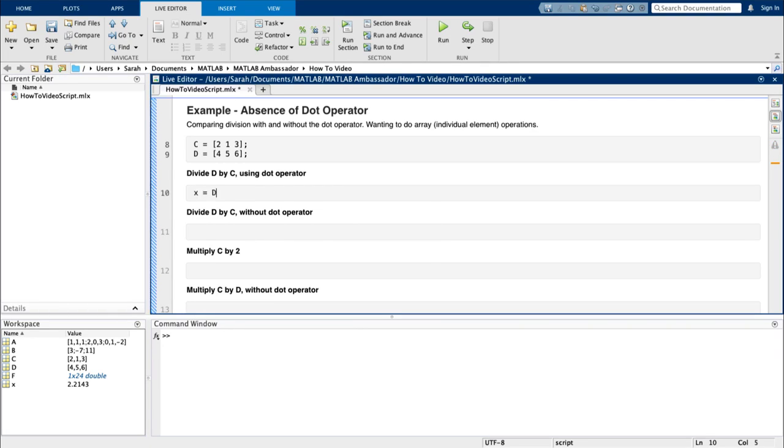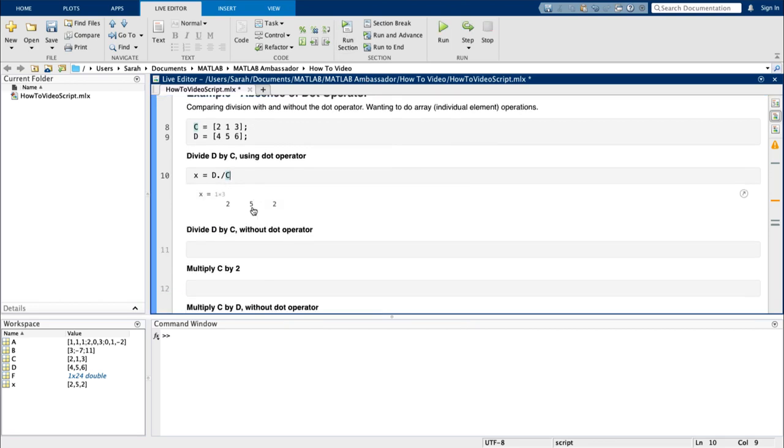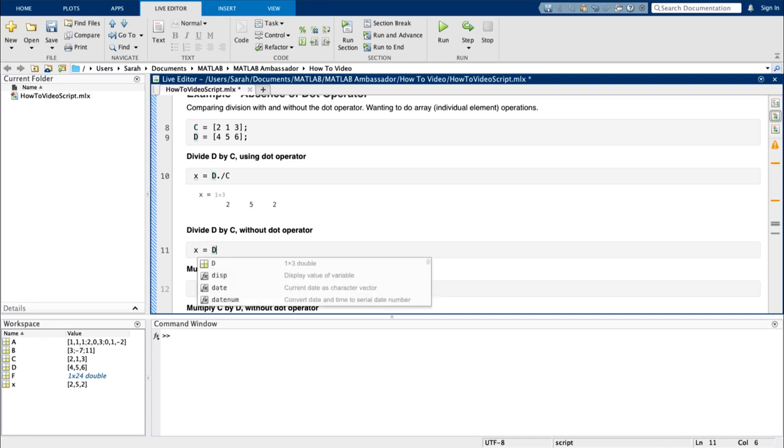Let's look at an example. Let's say I want to divide each element in row vector d by the element at the same index in row vector c. Since I want to perform an array division, and this operation involves multiple vectors, I need to use the dot operator. If I did not use the dot operator, I would still be performing a valid mathematical operation, but not the one that I wanted. I would instead be solving the matrix equation xc equals d.